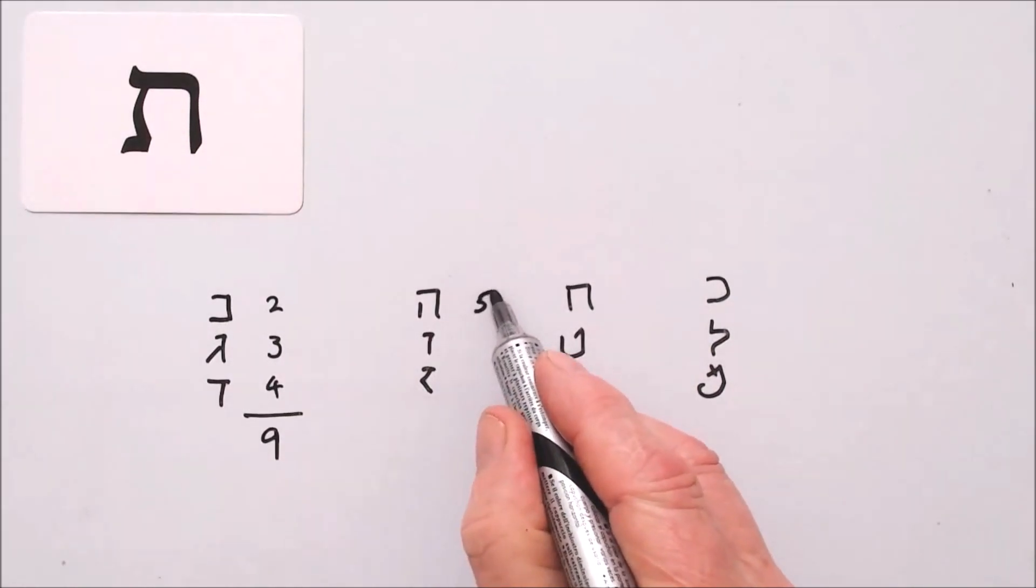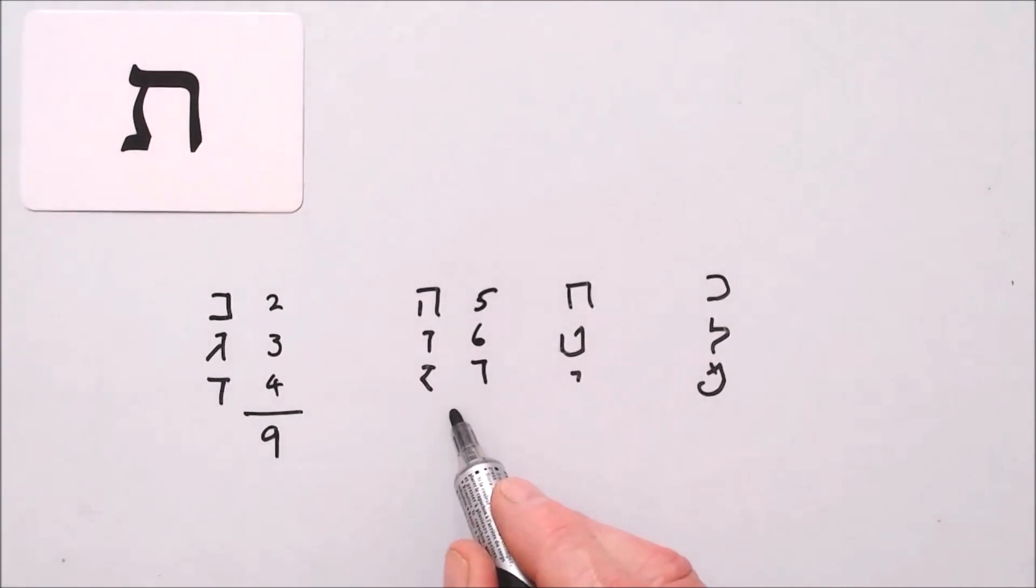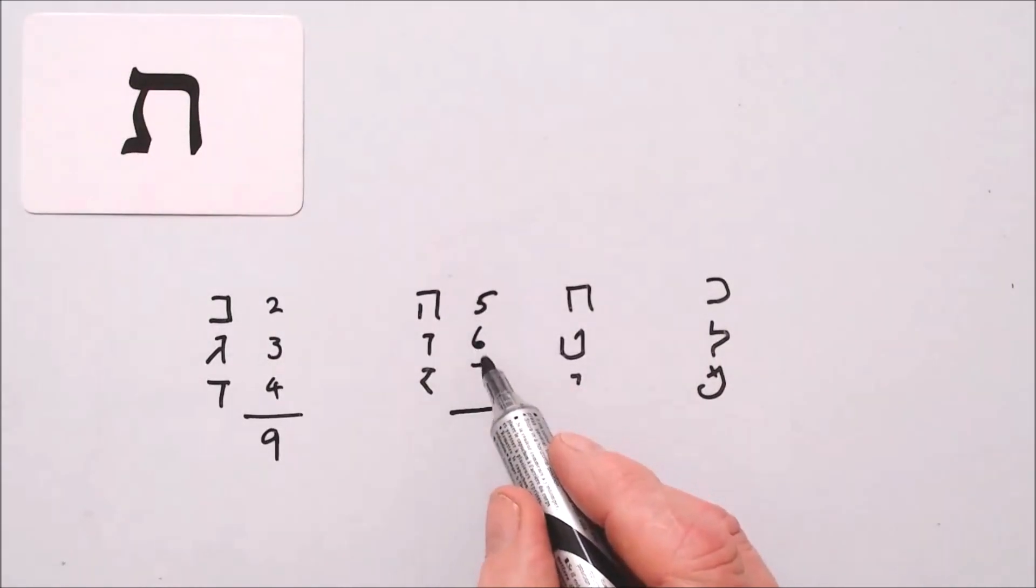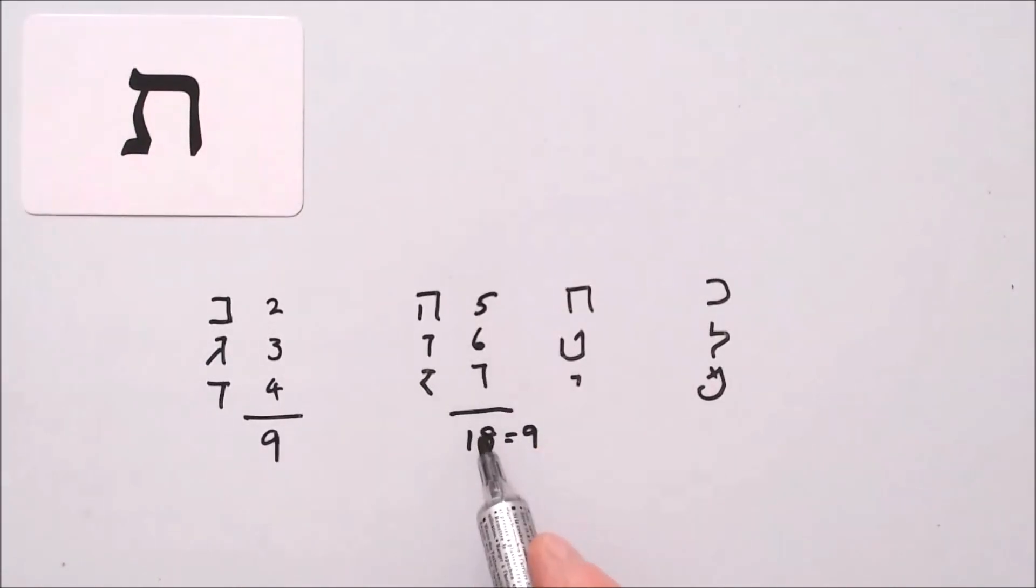He is five, Vav is six, Zion is seven. Add them up. Five and six is eleven, plus seven is eighteen. To arrive at the digit sum, we add eight and one. That equals nine. The digit sum is nine.